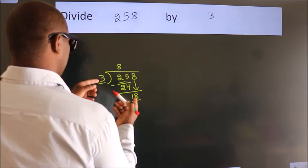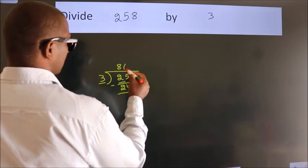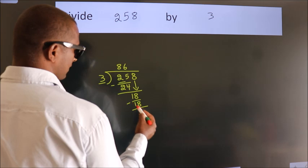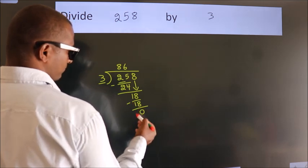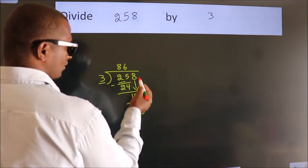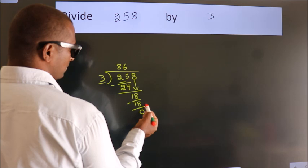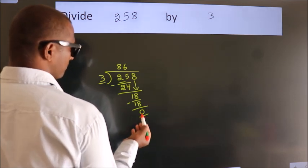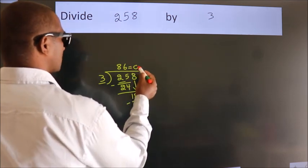18 in the 3 table? 3×6=18. Now we subtract and get 0. After this, no more numbers to bring down, and we got remainder 0. So this is our quotient.